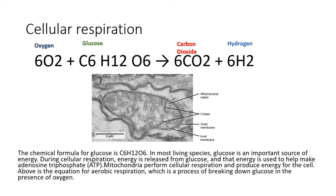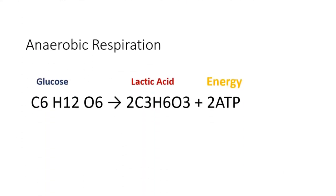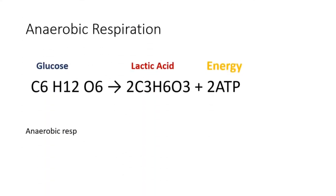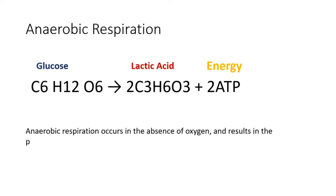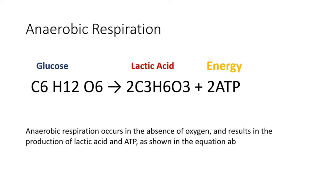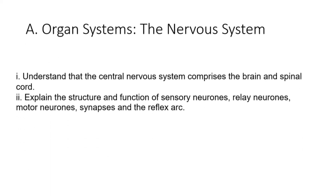Above is the equation for aerobic respiration, which is a process of breaking down glucose in the presence of oxygen. Anaerobic respiration occurs in the absence of oxygen, and results in the production of lactic acid and ATP, as shown in the equation above.